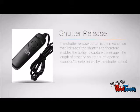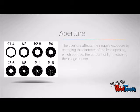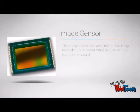Shutter release. The shutter release button is the mechanism that releases the shutter and therefore enables the ability to capture the image. The length of time the shutter is left open or exposed is determined by the shutter speed. Aperture. The aperture affects the image exposure by changing the diameter of the lens opening, which controls the amount of light reaching the image sensor. Image sensor. The image sensor converts the optical image to an electronic signal which is then sent to your memory card.